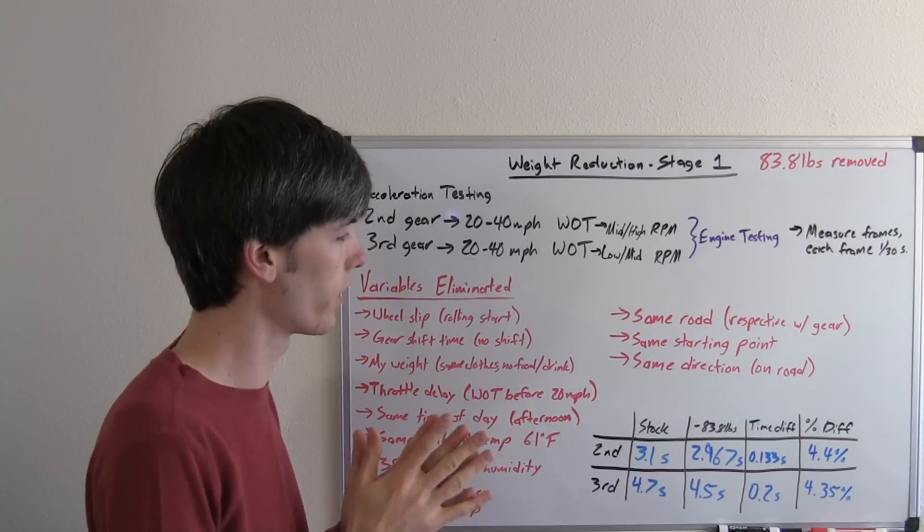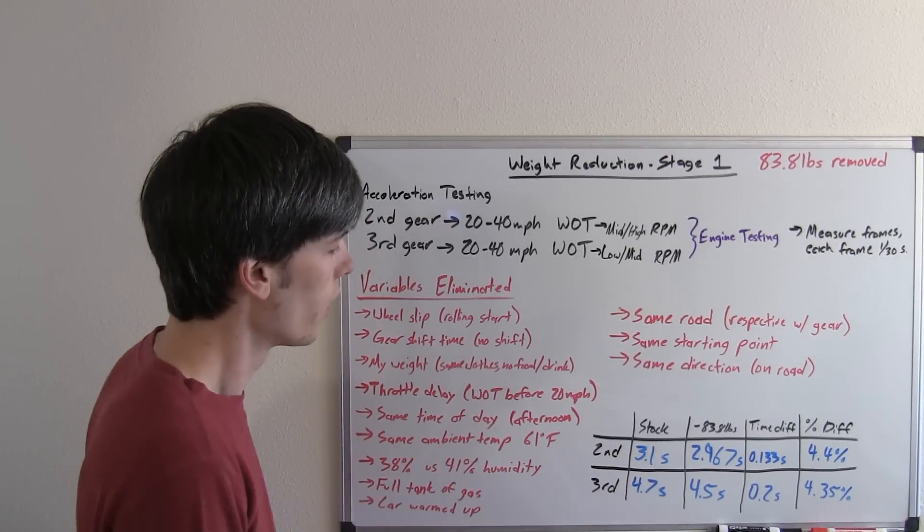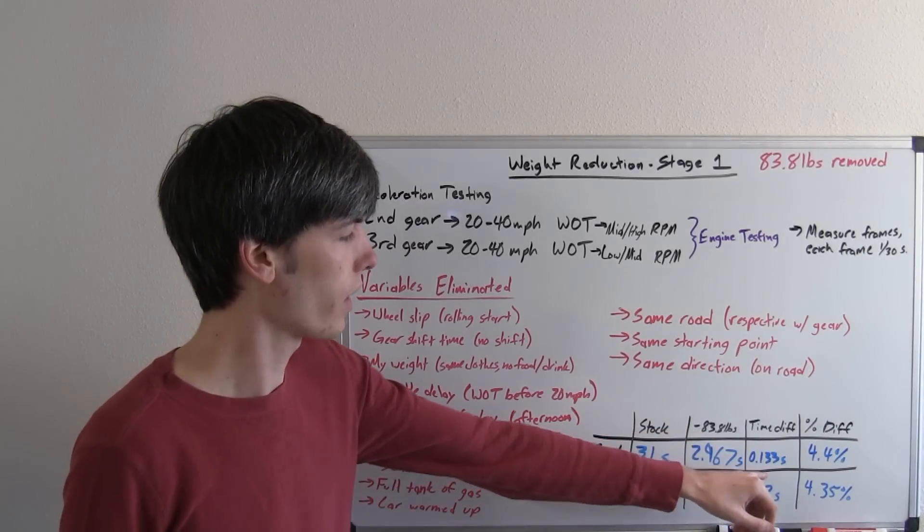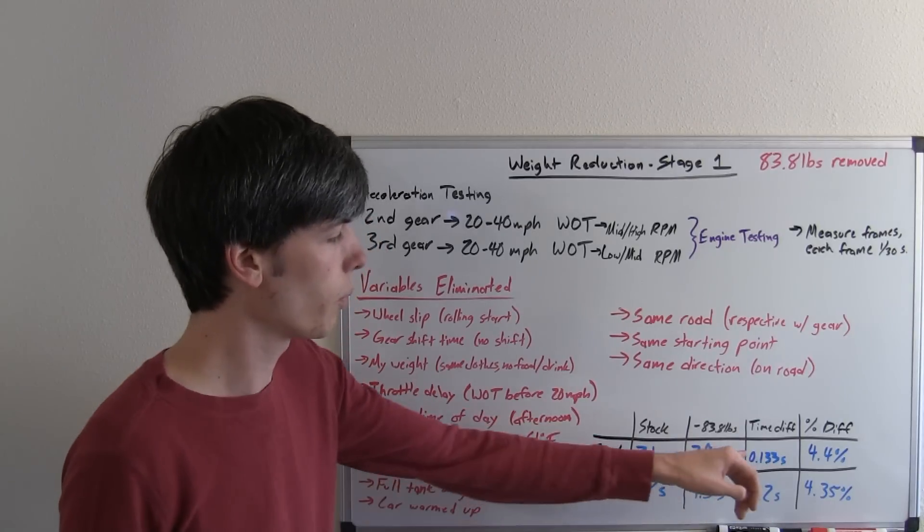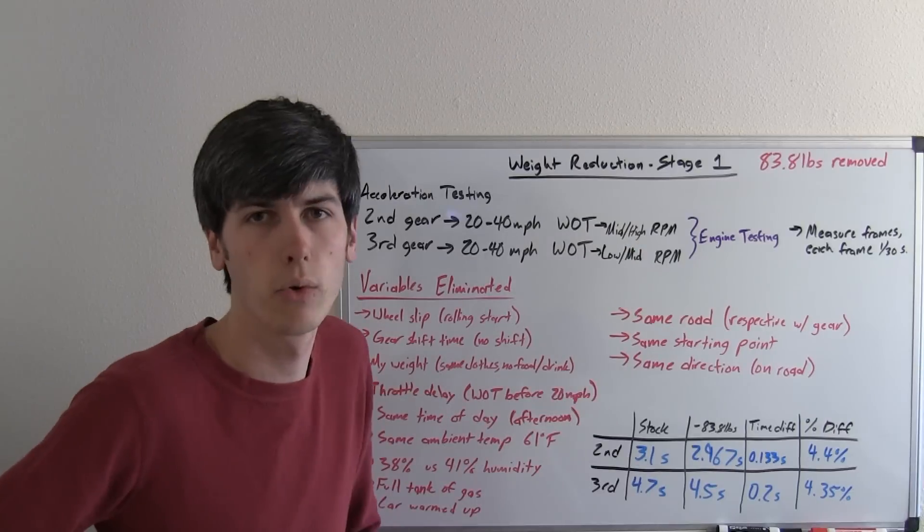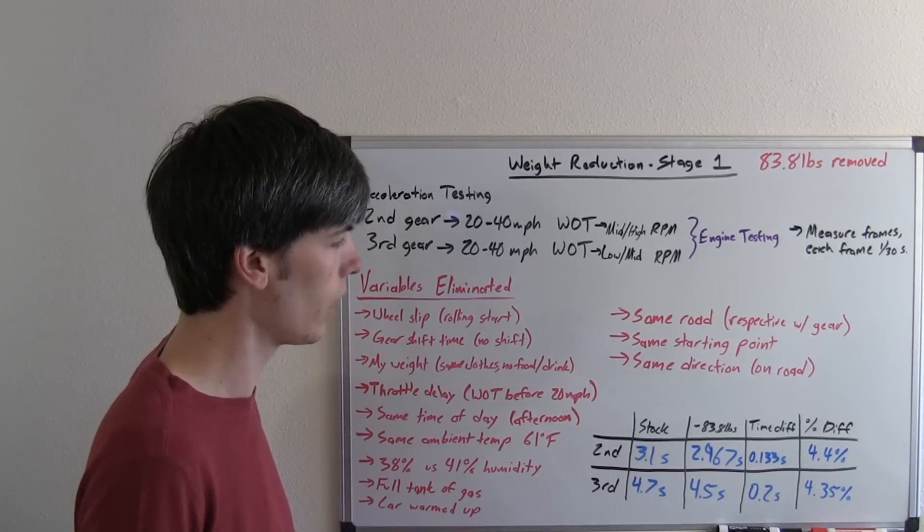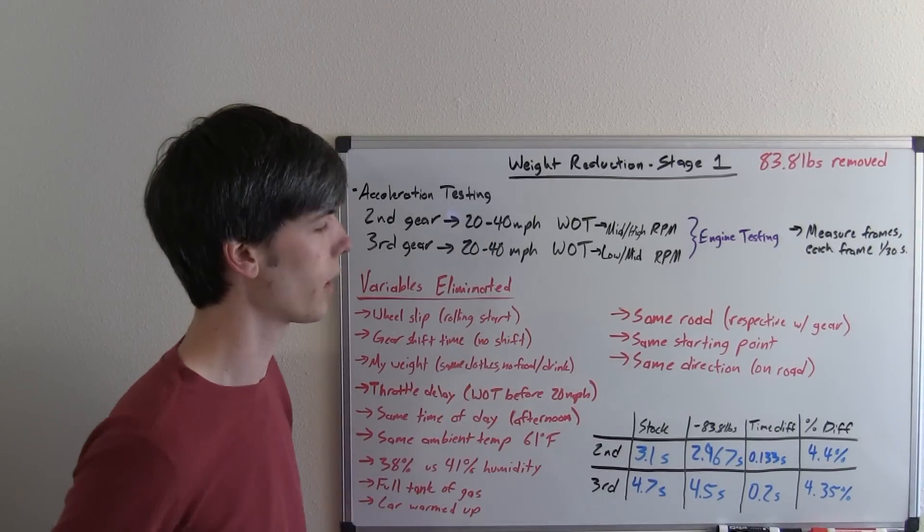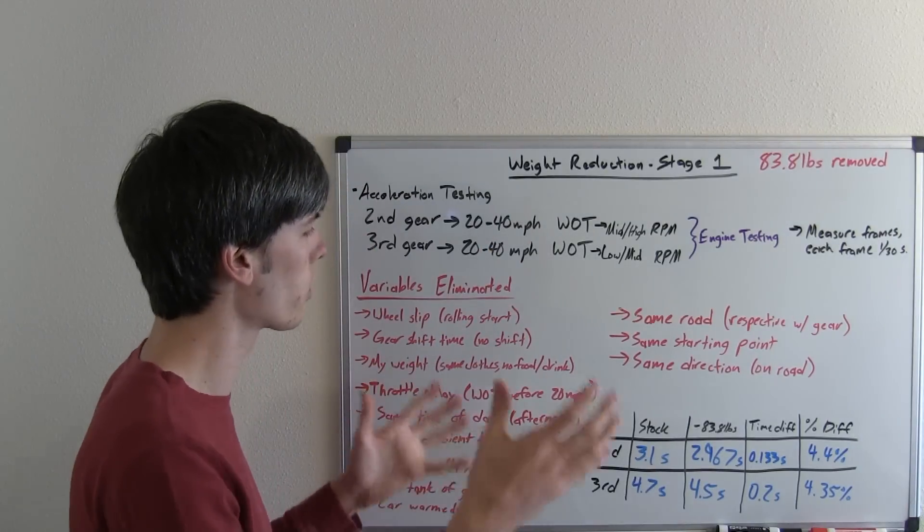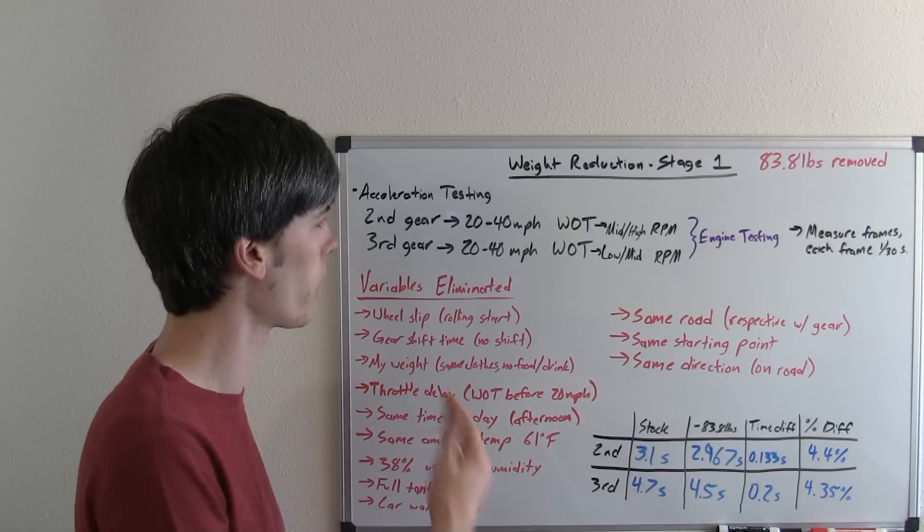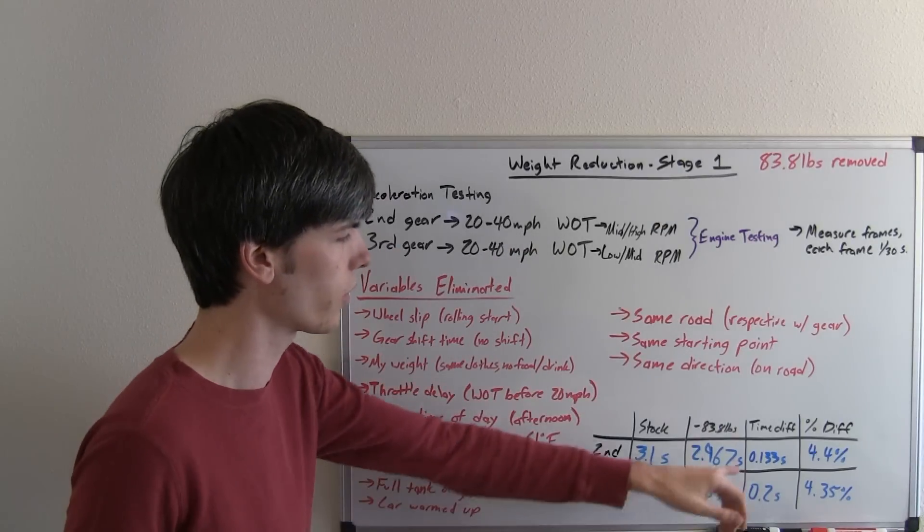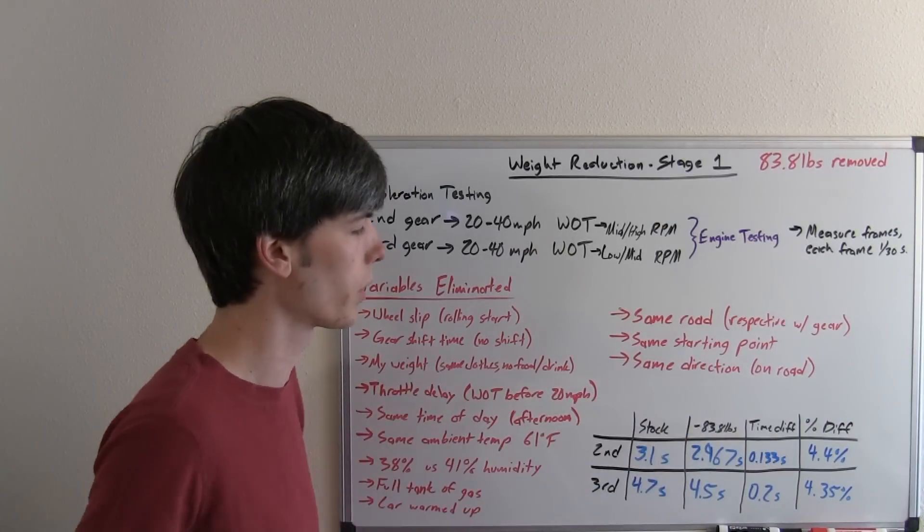So now that we've completed all of the tests, we can actually look at the real differences between them all. So for our second gear and for the stock versus the weight removed, we've got a time difference of 0.133 seconds. So 0.133 seconds, over an eighth of a second removed simply by taking out 84 pounds from the car. Maybe that doesn't sound like a whole lot, but that's pretty significant. I mean, this is only a 20 mile per hour difference, and you're talking about saving over a tenth of a second. If you're going to 60 miles per hour, I mean, that could be around 0.3 seconds that you're shaving off your zero to 60.